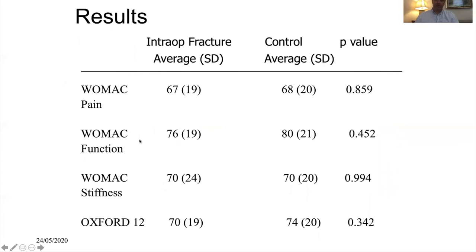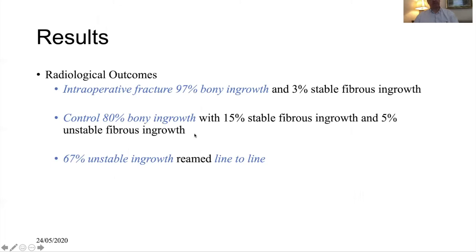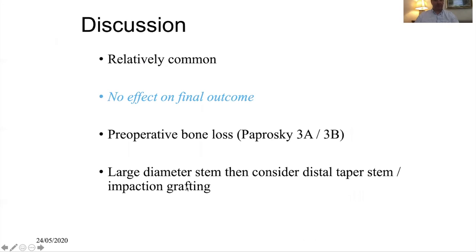Interestingly, the functional outcomes of these patients were not significantly affected — if the intraoperative fracture was dealt with, it didn't affect function, OFS scores, or satisfaction. Intraoperative fractures were actually associated with better ingrowth results, with only 3% fibrous ingrowth, whereas those reamed line-to-line had only 67% stable ingrowth. So while intraoperative fractures are relatively common with these stems, they don't really affect the final outcome if managed. When dealing with large diameter stems, consider distal taper or impaction grafting as an alternative.